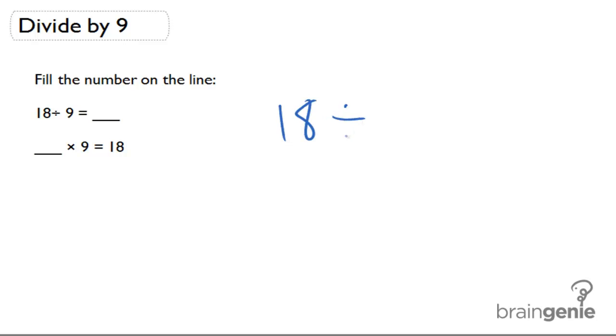18 divided by 9. So 18 divided by 9. What this means is how many times can 9 go into 18? So we have to figure out how many times I have to add 9 to get 18.